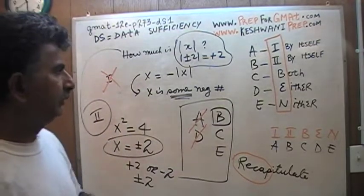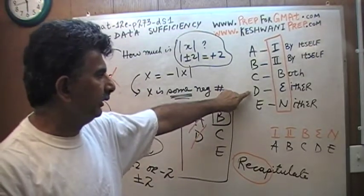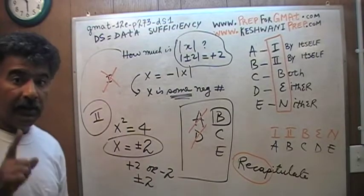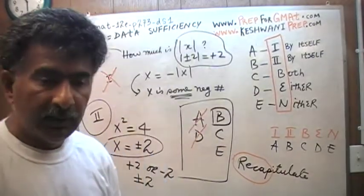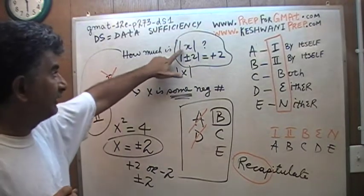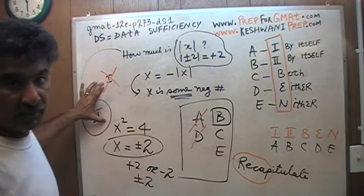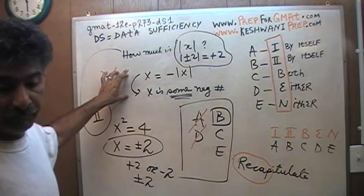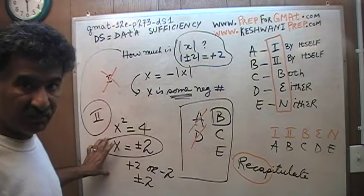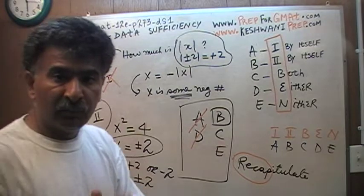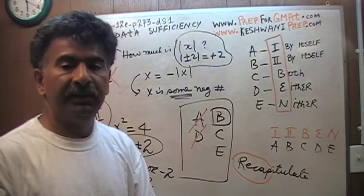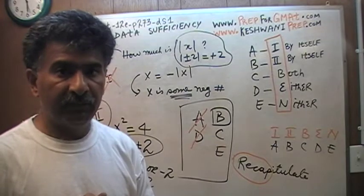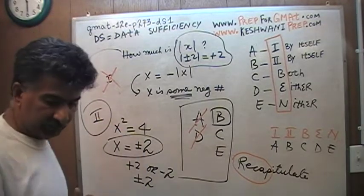Statement number 2 is enough by itself to answer the question. Therefore, the answer is B. We do not need to put them together. If the question was how much is x, as opposed to absolute value of x, then we would have needed both statements together. The second statement tells me x is positive 2 or negative 2. The first statement tells me x is a negative number. Putting them together, we would conclude x must be negative 2. But that's not what they're asking. The question is how much is the absolute value of x, which can be answered by the second statement by itself.